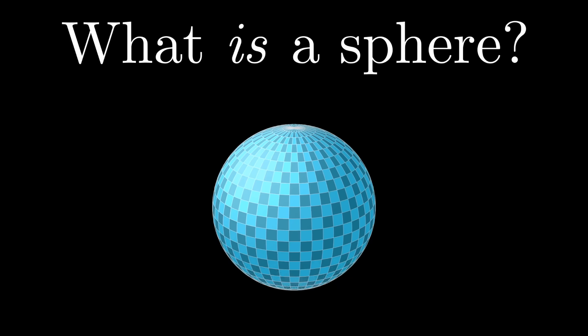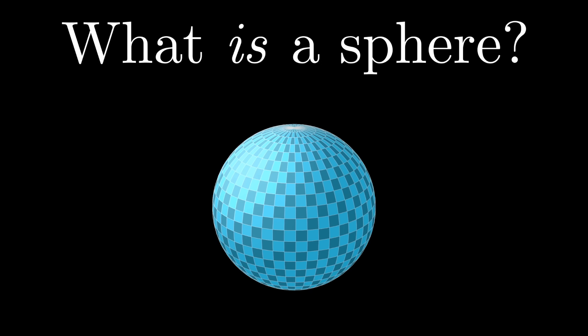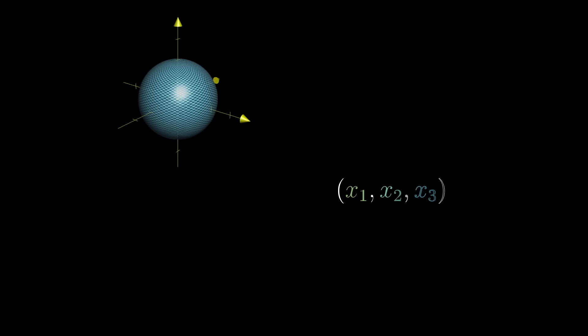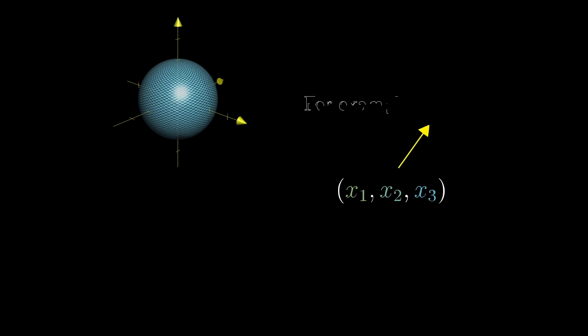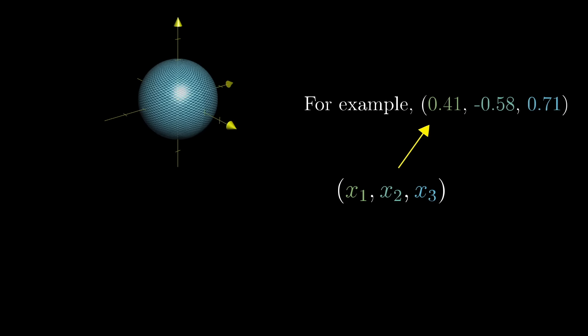First, answer me this. What is a sphere, really? Well, points in 3D space are represented with three coordinates. In some sense, that's what 3D space is, to a mathematician at least, all possible triplets of numbers.